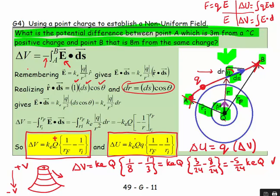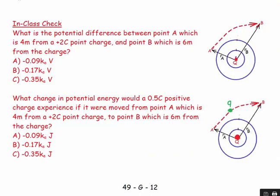You can remember the signs and apply them carefully — it works fine. Alternatively, form the analogy: ask yourself am I going uphill or downhill, and you'll get the right answer. Now let's look at two examples. Here we have: what is the potential difference between point A, which is 4 meters away from a +2 coulomb point charge, and point B, which is 6 meters away?